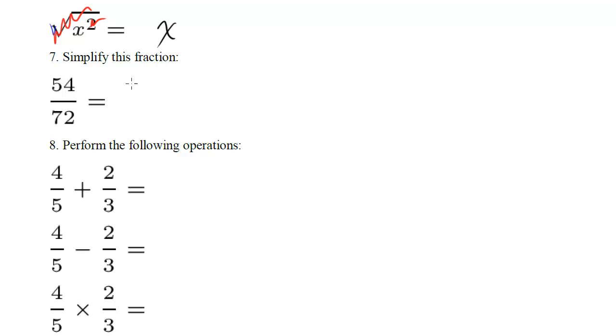Simplify the fraction. Well let's do it the long way, let's break this into its factors. Well 54 is 9 times 6, and 72 is 9 times 8, so we can go ahead and cancel out the 9's, so we're left with 6 over 8, but that can be broken down into 3 times 2 to 4 times 2, get rid of those, and we're finally left in the end with 3 fourths.